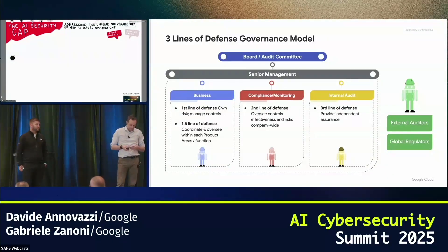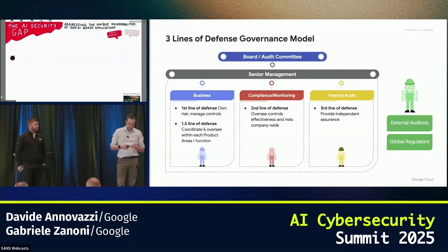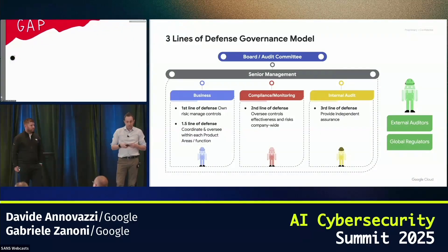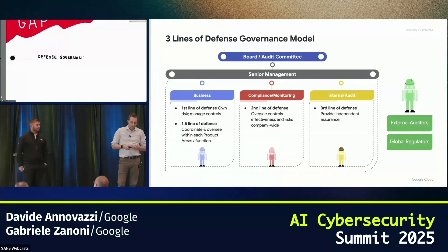I'm part of the Mandiant strategic team, so we work with our colleagues from the AI team and threat intelligence departments. We have been working on the use of AI and how to use AI in a safe manner. Today we are going to share some insights on how to initiate a security review of AI within a company. One of the main steps shown in this slide is about how to build a security governance model for AI.